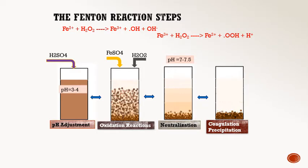The Fenton reaction steps: first, we heat up our sample to 40°C, then adjust the pH of the sample to about 2, add the ferrous iron sulfate slowly along with hydrogen peroxide, check pH, neutralize the sample, and finally wait and allow time for coagulation.